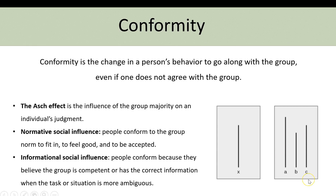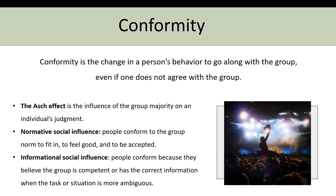The Asch experiments can be an example of informational social influence — the participant conformed because they believed the group was competent or had the correct information. Normative social influence might occur at a concert, where you want to conform to fit in — you might sing along if others are singing, crowd surf if others are crowd surfing, and mirror the group's behavior in order to fit in, feel good, or feel accepted.